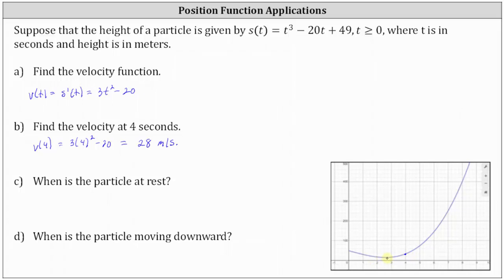To determine where the particle is at rest, we set the velocity function equal to zero and solve for t. So we have zero equals three t squared minus 20, or three t squared minus 20 equals zero. Add 20 to both sides, then divide both sides by three. Simplifying, we have t squared equals 20 thirds.